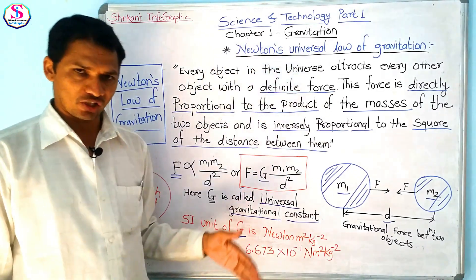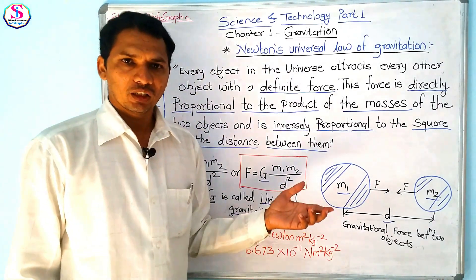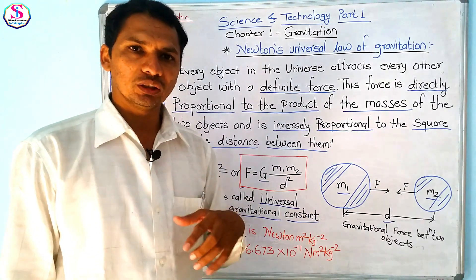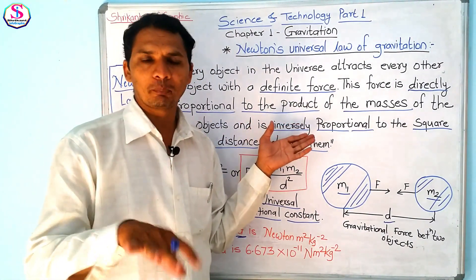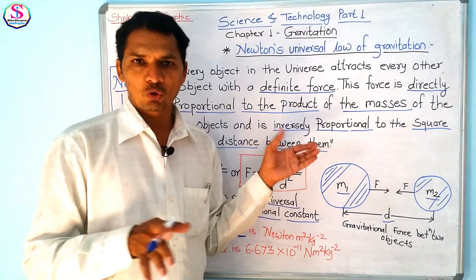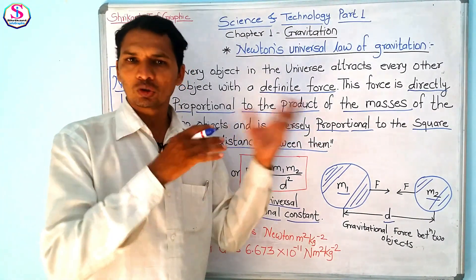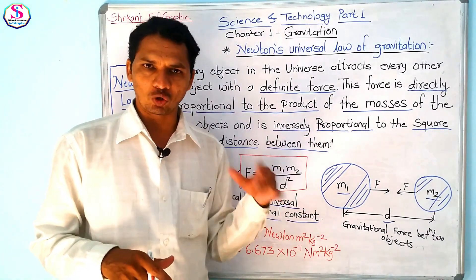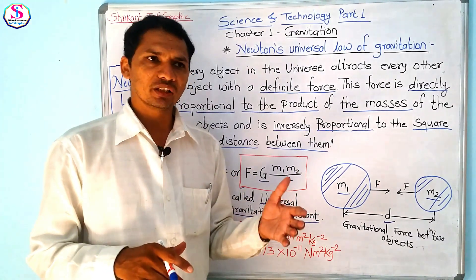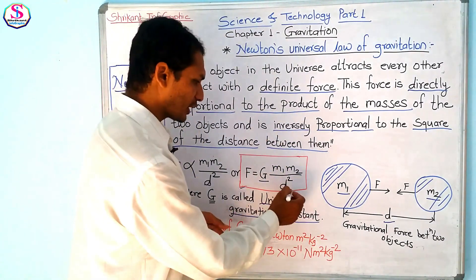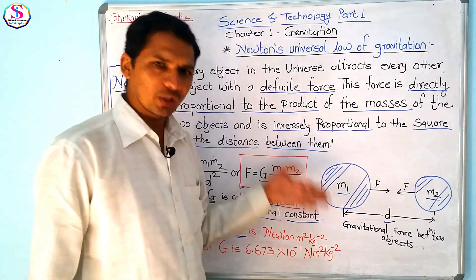This whole concept is called Newton's universal law of gravitation. In the next video, we will see how Kepler's third law about the planetary movement of planets and objects helped Newton derive the inversely proportional square of the distance relationship.